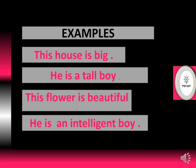Here are a few examples in sentence form. 'This house is big' — here no comparison is made. 'He is a tall boy.' 'This flower is beautiful.' 'He is an intelligent boy.' So you can see we have used positive degree and we are not making any type of comparison between two things or two persons. These are the examples of positive degree.